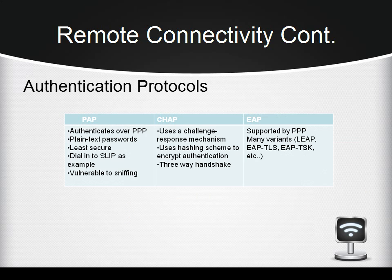Next, we will talk about authentication protocols. There are three different authentication protocols. The first is Password Authentication Protocol, PAP, which is the least secure because it uses plain text passwords and authenticates over PPP connections. The second is Challenge Handshake Authentication Protocol, or CHAP, a widely accepted industry standard that uses a hashing scheme to encrypt authentication. CHAP does not send the actual password over the network.